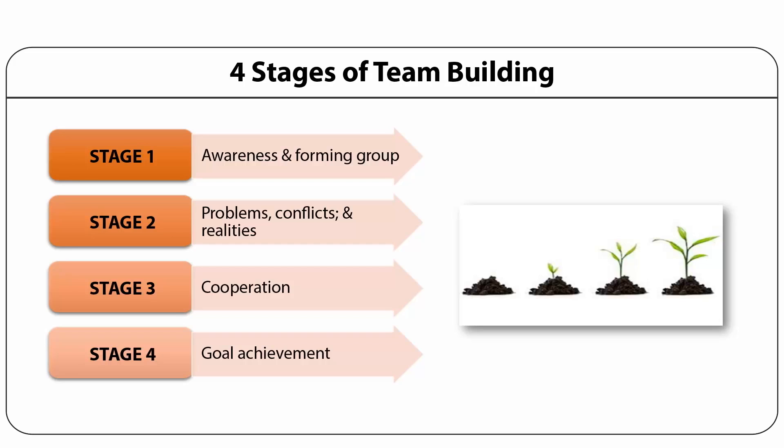In team building, a leader needs to exhibit greater transactional skills in the initial stages until team building outcomes such as awareness, clarification, belongingness, and acceptance are clear. Later, as the team matures, the leader needs to exhibit greater transformational skills to bring about outcomes such as achievement of set goals and objectives, pride, and satisfaction. A team should comprise a healthy mix of individuals with different capabilities and capacities.